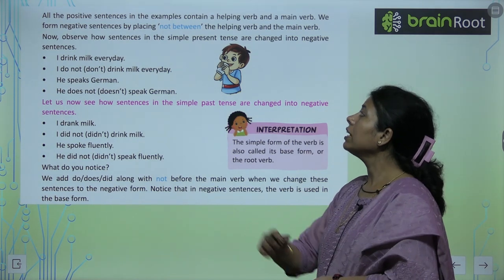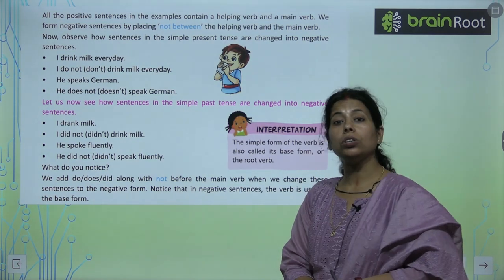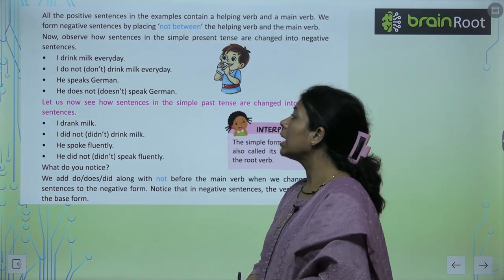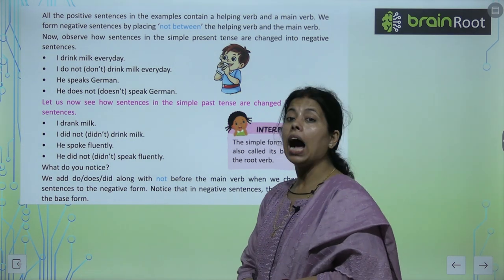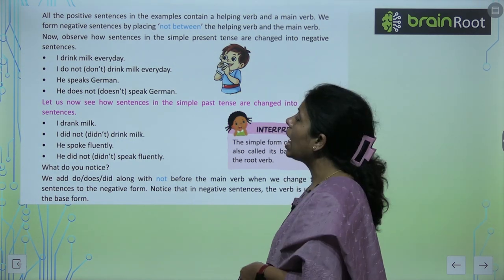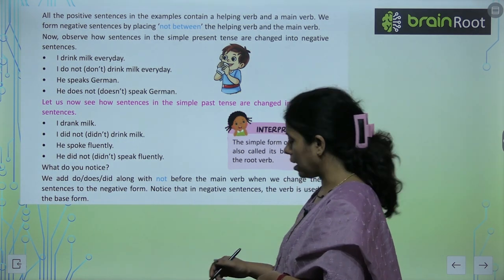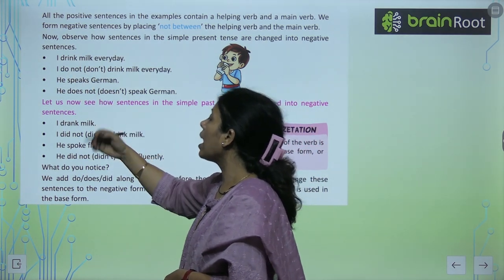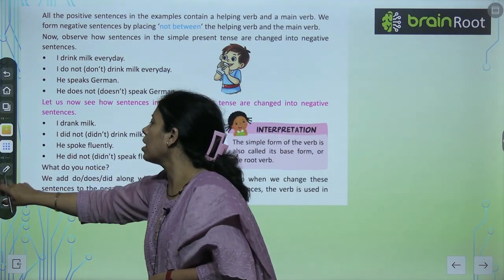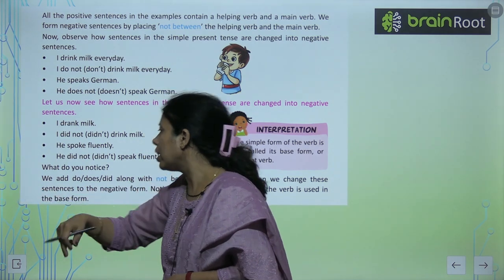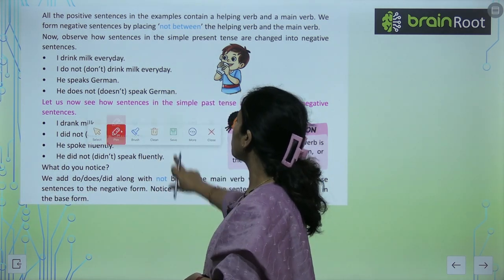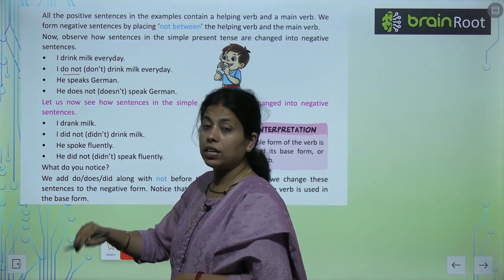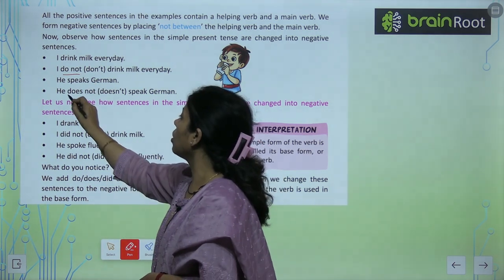आप देखते हैं कि simple present tense की जहां बात होती है — महां पर कैसे करेंगे: 'I drink milk every day' → 'I do not drink milk every day.' Every day — regularly हो रहा है, simple present है, तो 'do not' आएगा। 'He speaks' → 'He does not speak.'